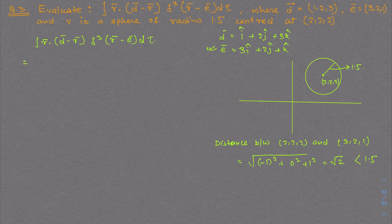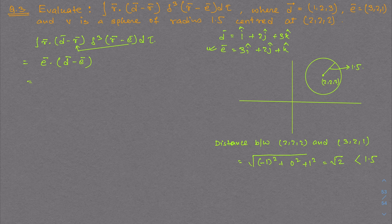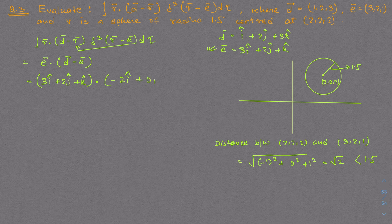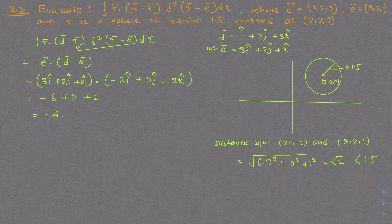Since e lies within the sphere, we substitute r = e into the integrand. We compute e·d - e: e·d = (3)(1) + (2)(2) + (1)(3) = 3 + 4 + 3 = 10, and d - e = (1-3)î + 0ĵ + (3-1)k̂ = -2î + 2k̂. The dot product e·(d-e) = (3)(-2) + (2)(0) + (1)(2) = -6 + 0 + 2 = -4. So the answer is -4.